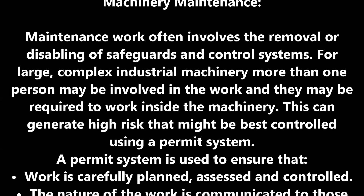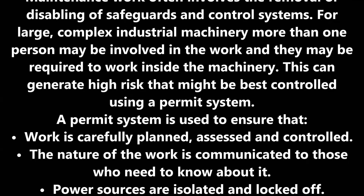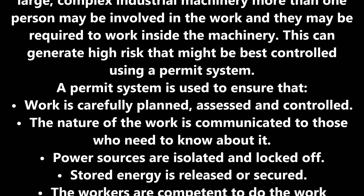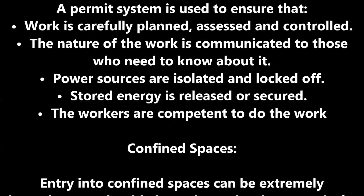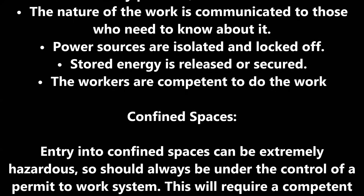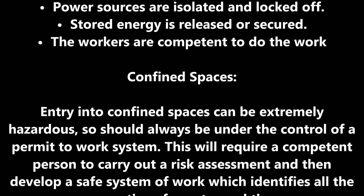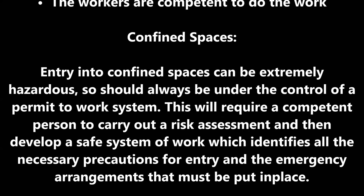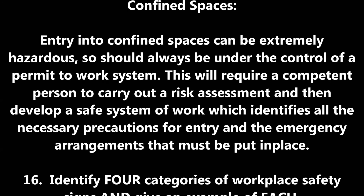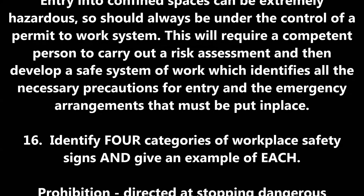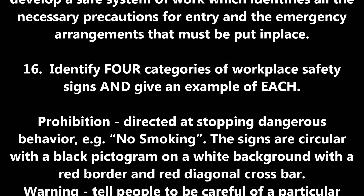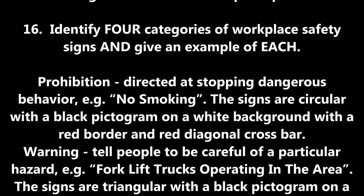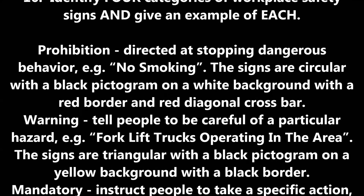Question 15a: Give the meaning of the term 'permit to work.' A permit to work (PTW) system is a formal, documented safety procedure forming part of a safe system of work, which ensures that all necessary actions are taken before, during and after particularly high-risk work. Question 15b: Three types of work requiring a permit to work. Hot work: permit systems control work involving naked flames such as propane, butane or oxyacetylene torches, or significant ignition sources such as welding or grinding. Typical precautions include: removing flammable materials from the work area; covering items that cannot be removed with fire-retardant blankets; sweeping the floor clean; having a suitable fire extinguisher at hand; posting a fire watcher; and damping down wooden floors.